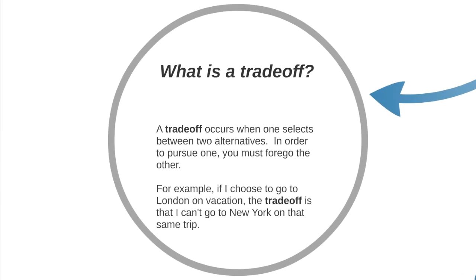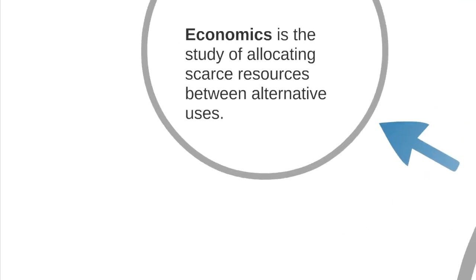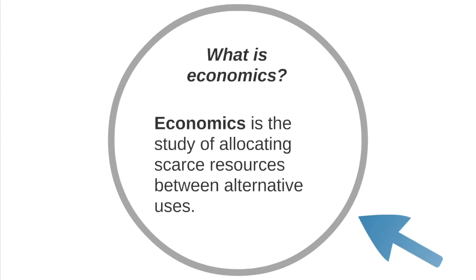Tied to scarcity is the concept of a trade-off. A trade-off is when you have to choose one thing over another — a situation where you can't have both and must choose one option. For example, if I had a week of vacation coming up and wanted to go to London or New York for that entire week, I couldn't be in both places at once. The trade-off of going to London is missing out on the trip to New York. Economics is exactly this.